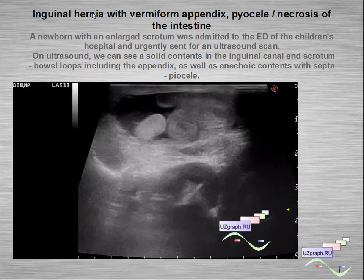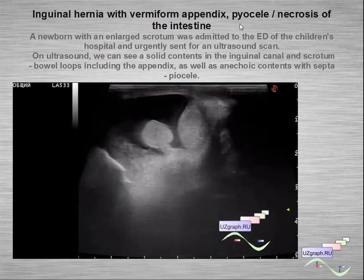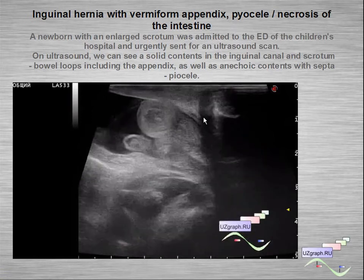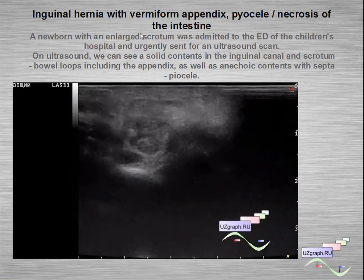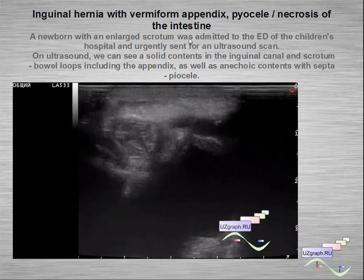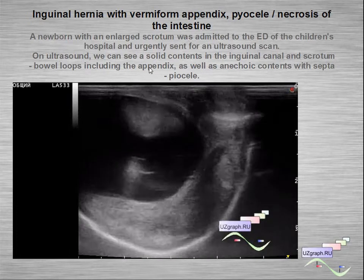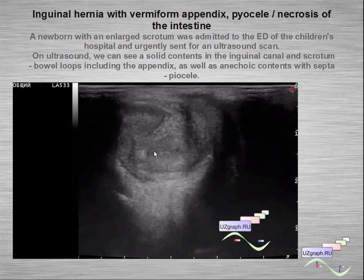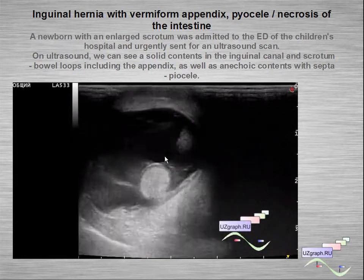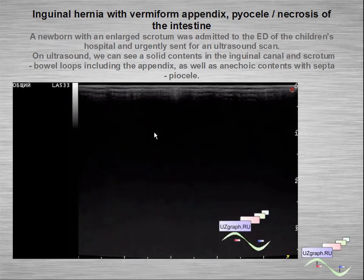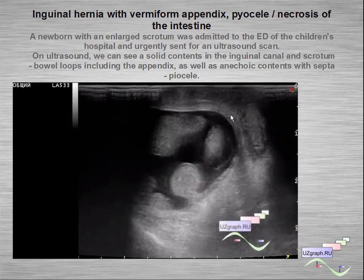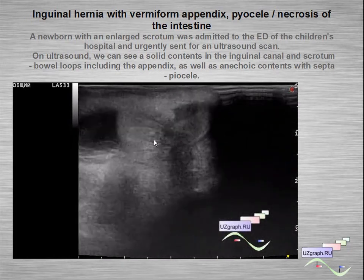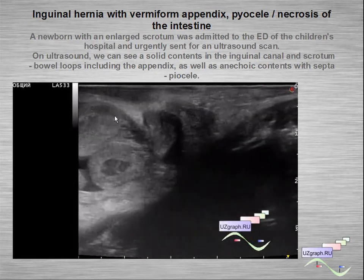Inguinal hernia with a vermiform appendix: in another case we can see the appendix in the scrotum along with other intestinal loops. This is a newborn child with an enlarged scrotum sent for ultrasound; we can see solid content, anechoic content with septum, and intestine with thickened wall. This is pyocele and inguinal-scrotal hernia.